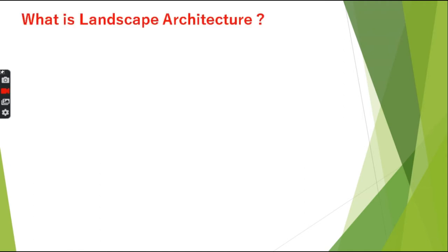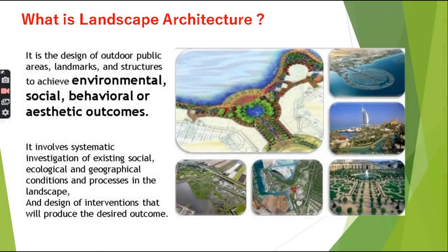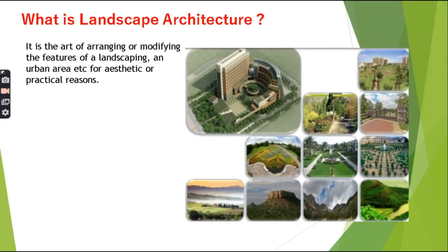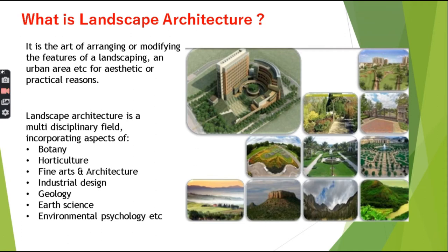Moving on to the third term, that is Landscape Architecture. What is Landscape Architecture? It is the design of outdoor public areas, landmarks and structures to achieve environmental, social, behavioral or aesthetic outcomes. It involves systematic investigation of existing social, ecological and geographical conditions and processes in the landscape and design of interventions that will produce the desired outcome. It is also the art of arranging or modifying the features of the landscaping and urban areas for aesthetic or practical reasons. Landscape Architecture is a multidisciplinary field incorporating aspects of botany, horticulture, fine arts and architecture, industrial design, geology, earth science, environmental psychology, etc.